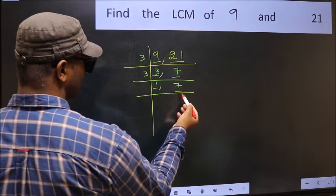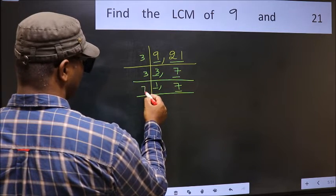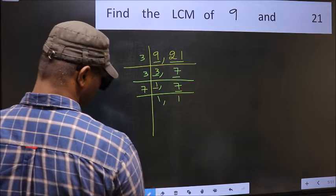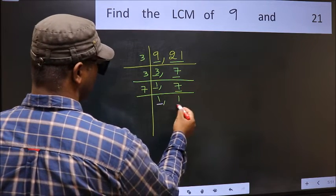So focus on the next number 7. 7 is a prime number so 7 times 1 is 7. So we got 1 in both the places.